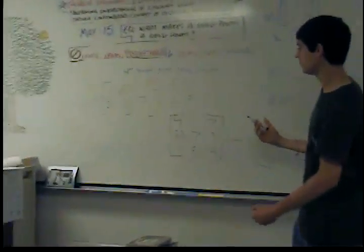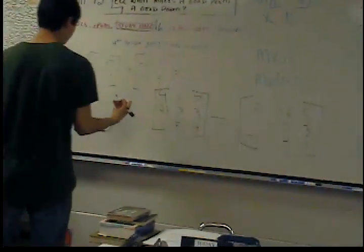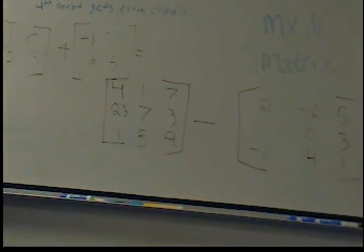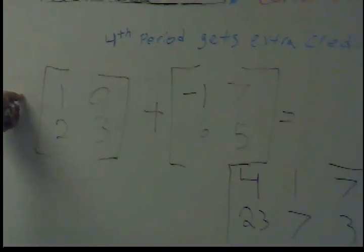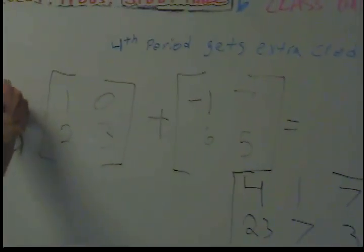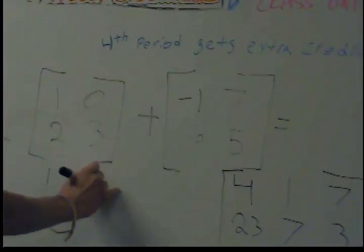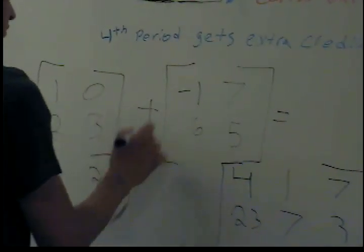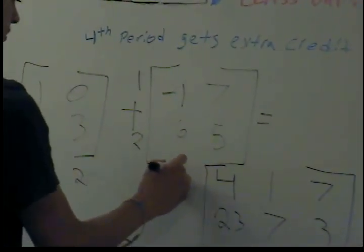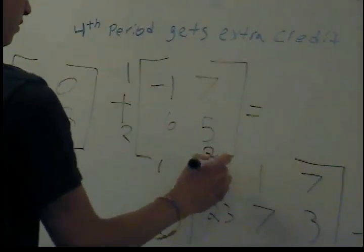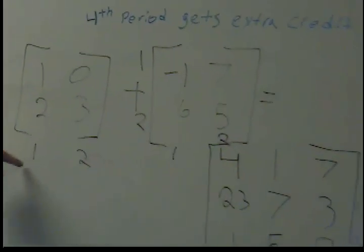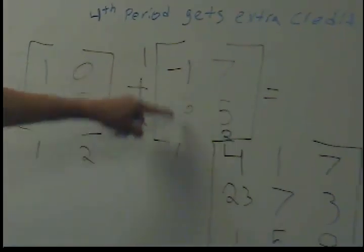So if you have the same dimensions, you can add. And to add them, you just add the same dimensions of the matrix by the same spot. For example, row 1, column 1. You have the same dimensions. Row 1, column 1. Row 1, column 1.